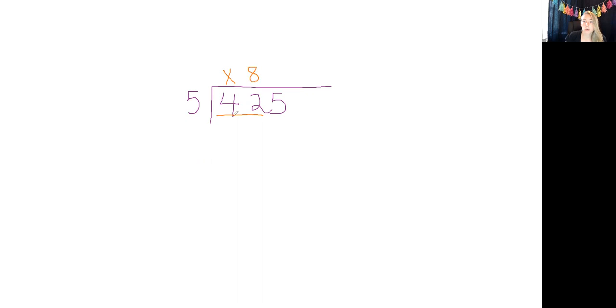That's as close as we can get to 42. So we're going to subtract 40. That's going to leave us with 2. Then we will bring down this 5 and see how many times 5 can go into 25, which is 5. Okay, so now we have our answer: 85.